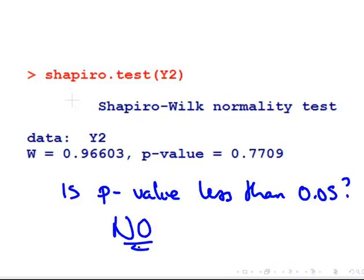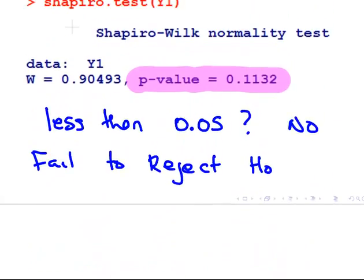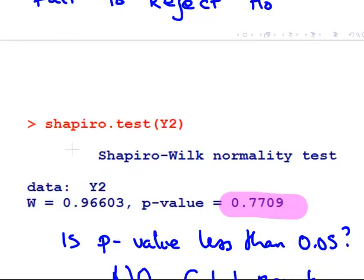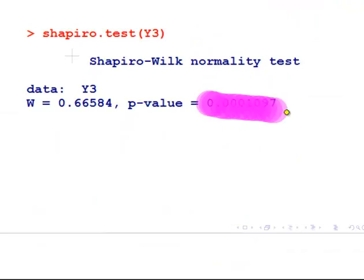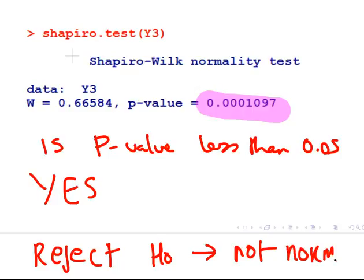Here again — is the p-value less than 0.05? No, same interpretation as last time. We fail to reject the null, meaning there's not enough evidence to say this dataset is not normally distributed. The very high p-value there is very reassuring. Now look at this next case — the p-value is not 0.1097; it's definitely less than 0.05. Yes — reject the null. We're pretty sure it's not normally distributed.